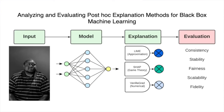There are three main state-of-the-art explainability methods. First is LIME, which approximates large neural networks with simple linear regression models. Second is SHAP, which uses game theory and treats inputs like players in an explainability game. Third is VanillaGrad, which looks at nodes and patterns and trends to explain how an input becomes an output.